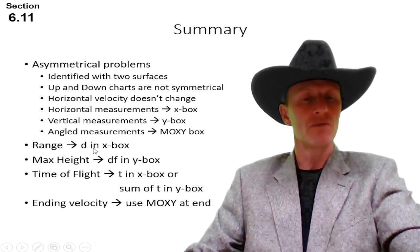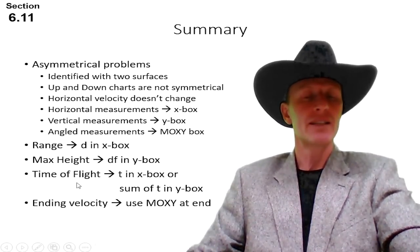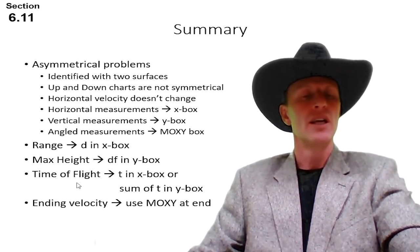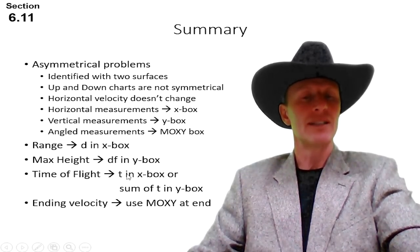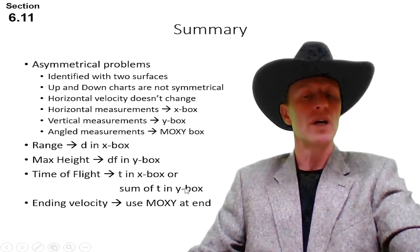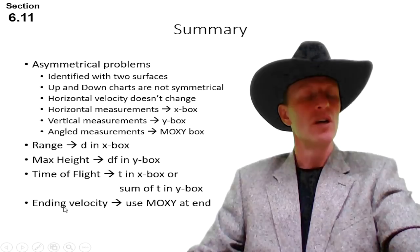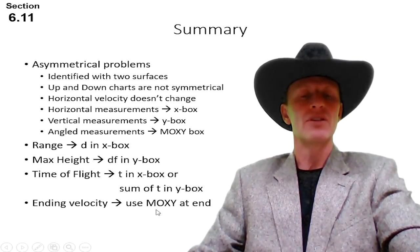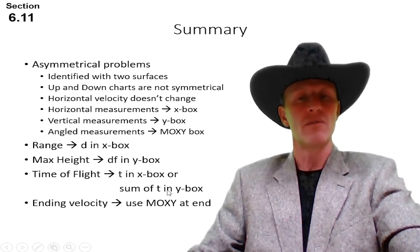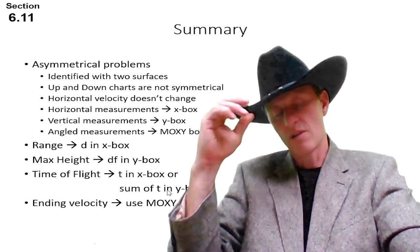When you're asked to find the range, it's going to be in the x box. The max height is going to come out of the y box. The time of flight, remember, it's what connects the horizontal and the vertical motion, can be found by the x box t or the sum of the two y box t's. And if it asks you to find that velocity vector for when it hits the ground, that ending velocity, you're going to have to use start with a moxie sometimes and end with a moxie. So there you have it. Asymmetrical problems. Cowboy Joe out.